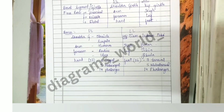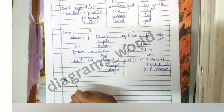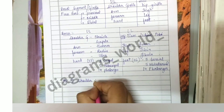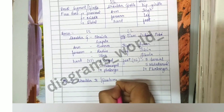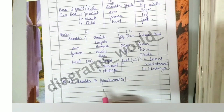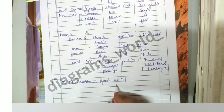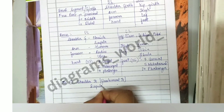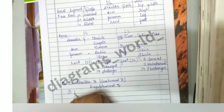Now that we are done with the bones introduction, let's focus on the joints of the upper limb and lower limb. In the upper limb, the first joint is the shoulder joint, also known as the glenohumeral joint, because it is made up of the glenoid fossa of the scapula and the humerus bone. It is also known as the scapulohumeral joint.